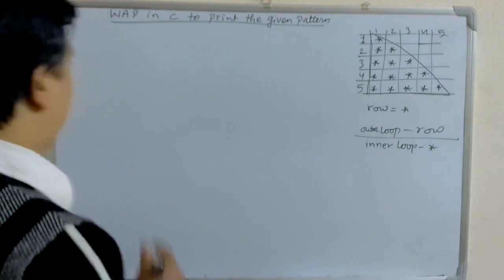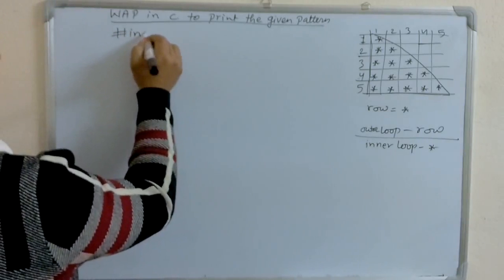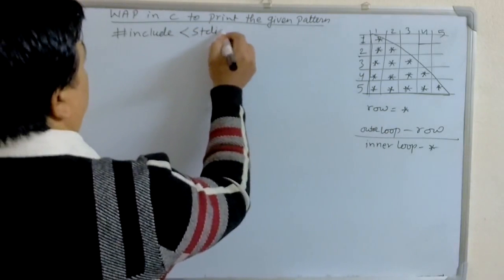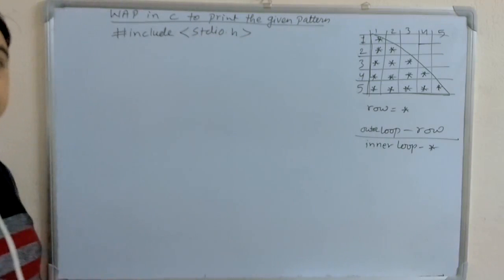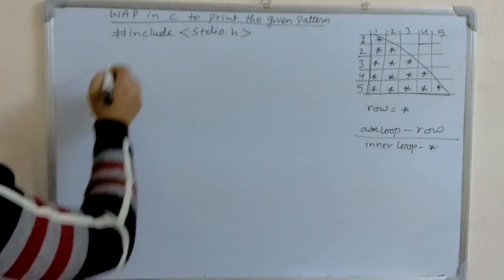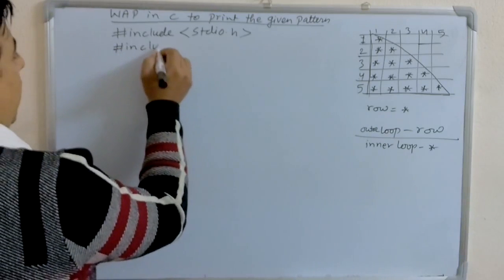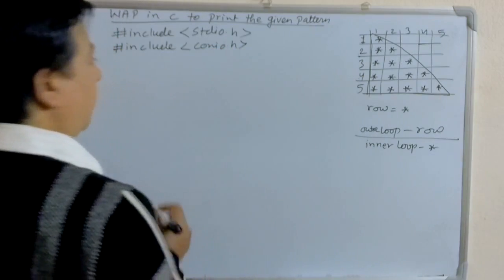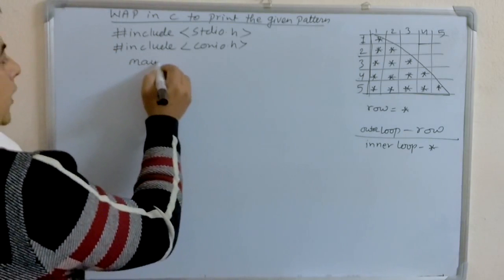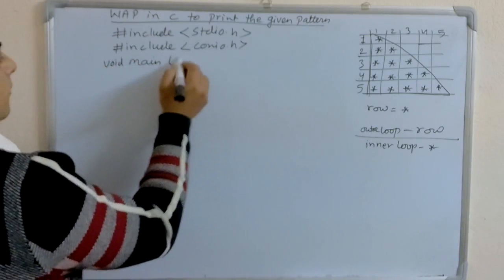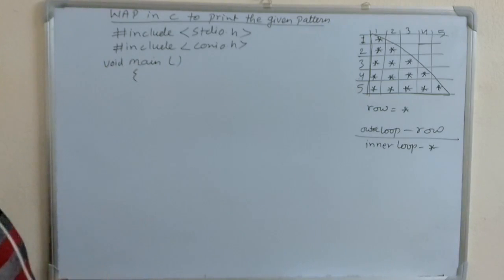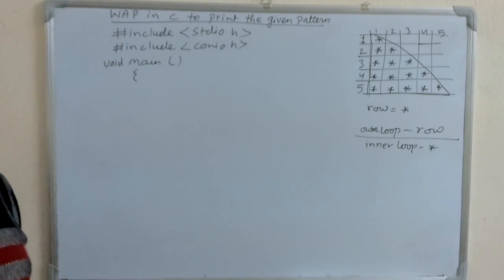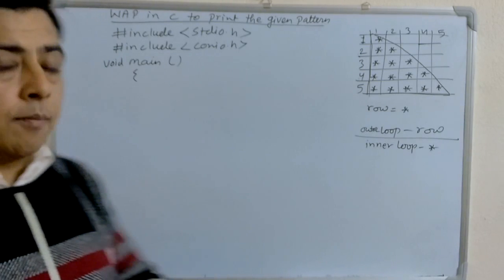Let's begin the program with the header files. Include the most common header file, that is stdio.h, which is used for standard input output. And the next header file is conio.h. Let's begin the program with the main function. There is one main function in a C program, and the main function includes two parts: declaration part and executable part.